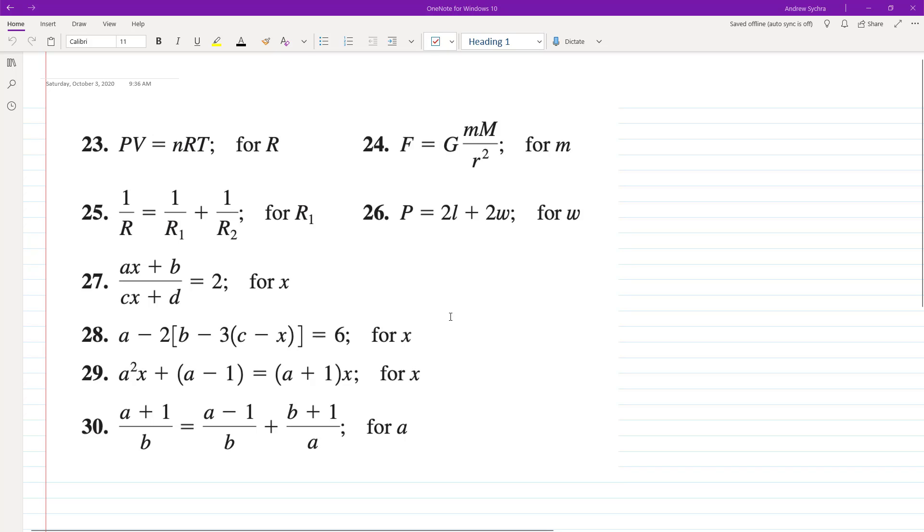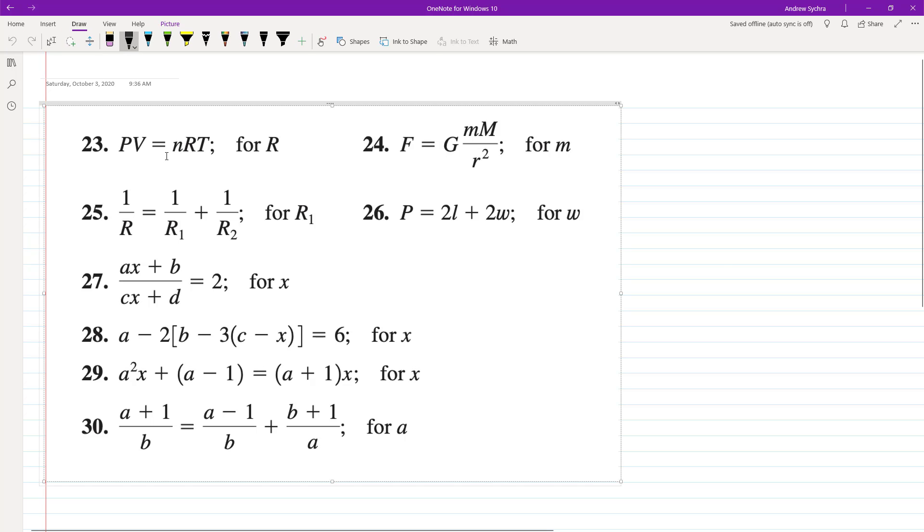All right, so let's go ahead and solve for each specified variable in all these problems. Starting off at 23 and we'll work all the way down. So if we want to solve for R in this case, R is on the right side of the equation. We want to divide through by N and T. So essentially what we're going to end up with here is big R is equal to PV divided by NT.